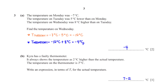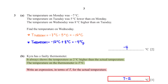Kira has a faulty thermometer that always shows the temperature as 2°C higher than the actual temperature. The thermometer reads t°C. Write an expression in terms of t for the actual temperature. To get the actual temperature we subtract 2 from the reading t, so the answer is t − 2.